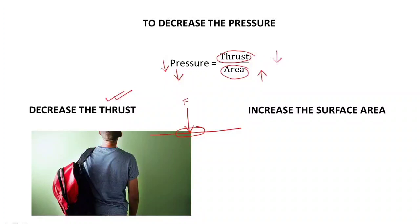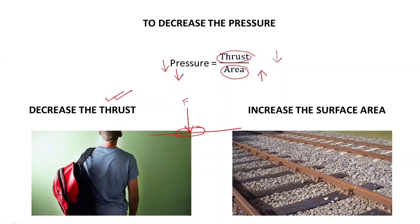Another example is railway tracks. To minimize the pressure of the railway lines on the ground, flat wooden pieces are placed under the tracks. These flat wooden surfaces increase the surface area, which reduces the pressure exerted by the weight of the railway lines on the ground. Increasing the surface area this way decreases the pressure.